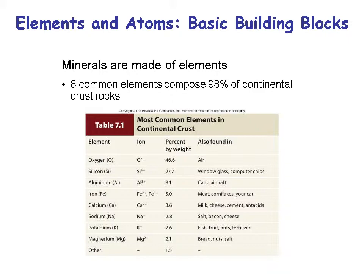Minerals are made up of elements. There are eight common elements that compose 98% of continental crust rocks. Oxygen and silicon comprise most of those elements, followed by aluminum, iron, calcium, sodium, potassium, and magnesium — and then just about 1.5% other minerals.